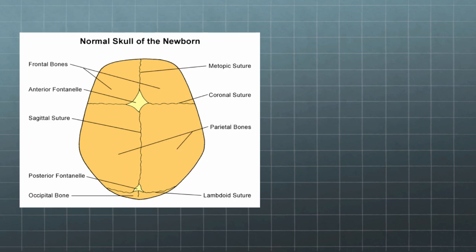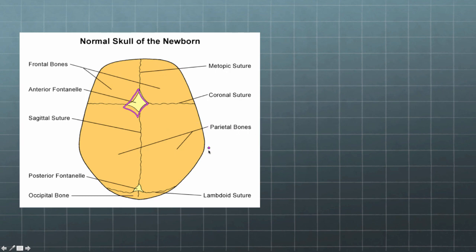Anyone who's been around a baby knows that a baby has a soft spot — a place on the top of its head where there's no bone, because the bones haven't grown together yet. In order for a baby to be born, it needs that soft spot to pass through mom's birth canal and pelvis; otherwise the baby won't fit — it'll be too big.